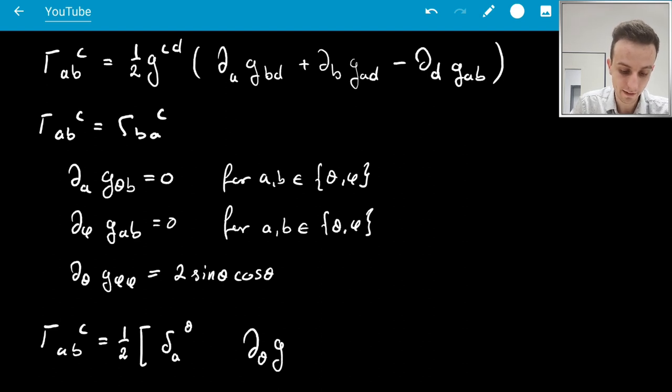Now B and D have to be phi, so Kronecker delta φ collapses the B into phi, and then the D has to also be phi for this to be non-zero.